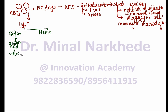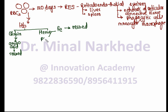When globin is broken down, it leads to formation of amino acids, which can be reused for synthesis of new proteins — this happens in the liver and spleen. Heme consists of two components: iron at its center, which can also be reused, and a second component called porphyrin.